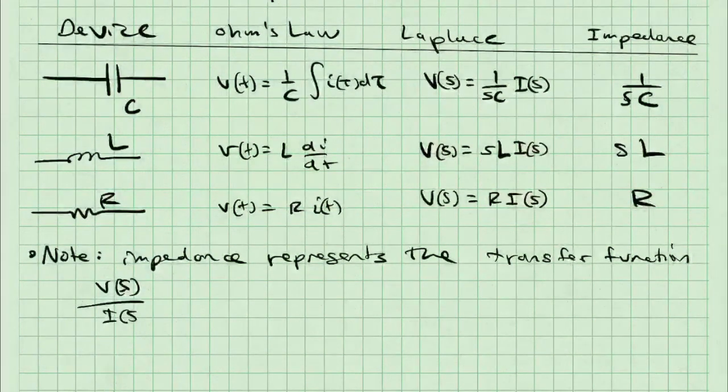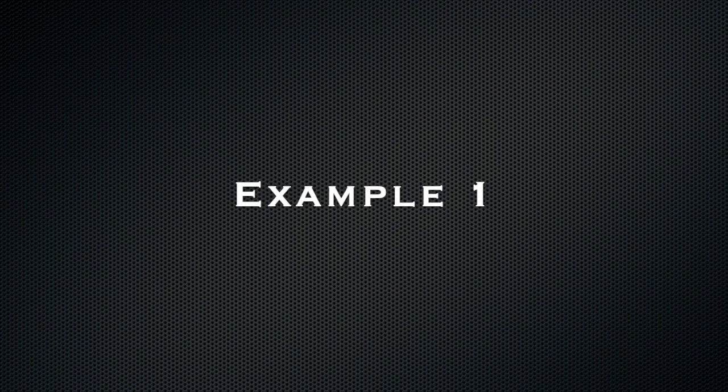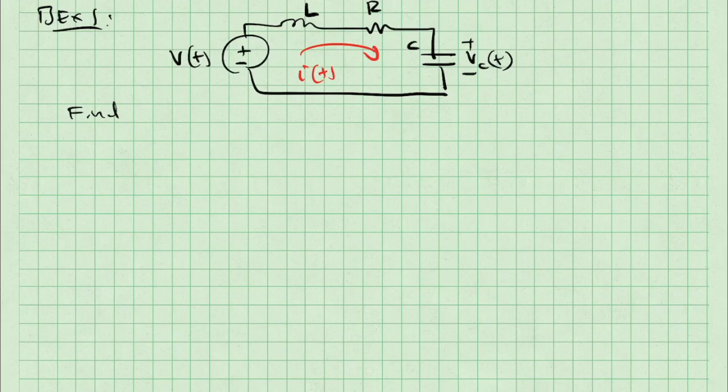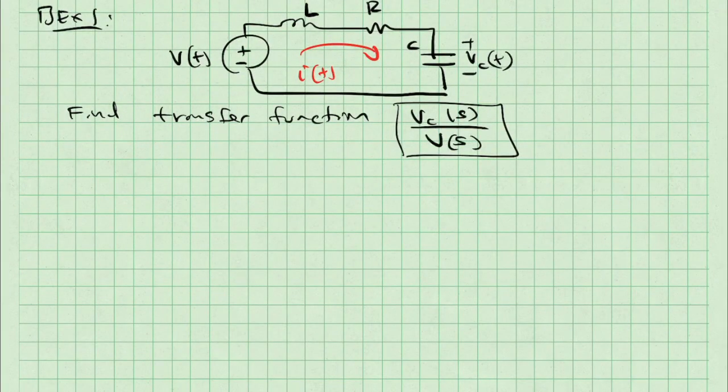I'd like to put this into practice using an example. I'm going to start with a single loop because it is easy for us to understand. I have a voltage source V of T and then an LRC circuit. I'm looking at the output voltage across that capacitor Vc of T, and there's a time domain current I of T as well. What I'd like to find is the transfer function Vc of S over V of S.